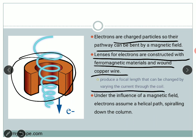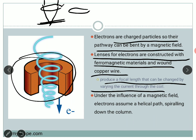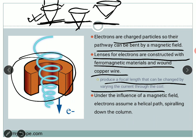The reason for winding with copper wire is to pass current through it so that the focal length can be changed. Consider a convex lens focusing rays of light — if you change the position of the lens, the focus point changes. Focusing is very important, and that is why we use copper wire through which current can be applied so that focusing of the electron beam can be done. Under the influence of the magnetic field, electrons assume a helical path and spiral down the column.